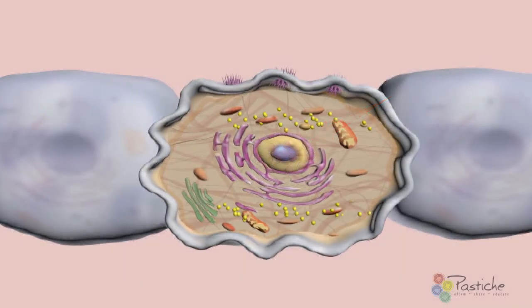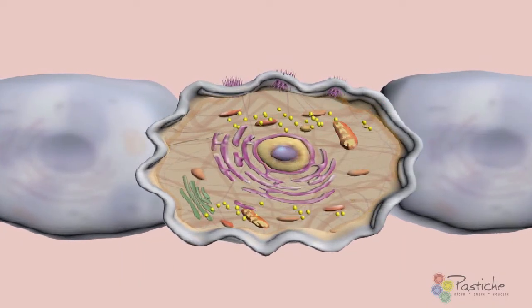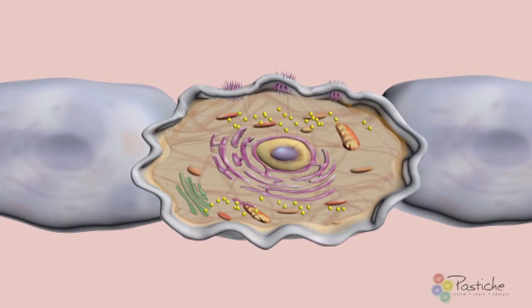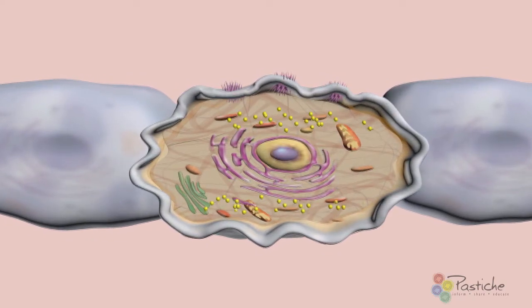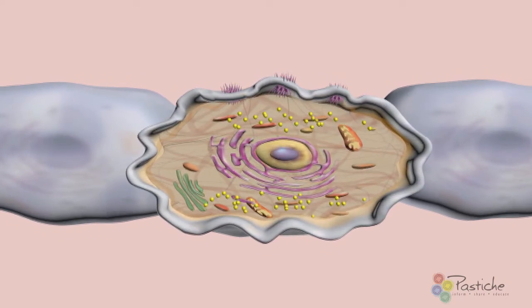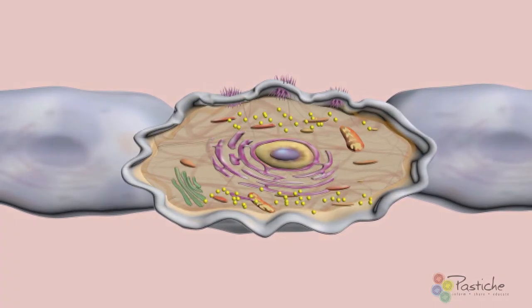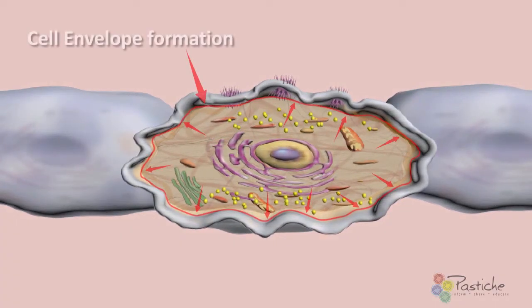The keratinization process is well underway in the upper cells of the spinosum layer, and cell shape is further changing while moving into the granular layer. It is in the granular layer that the keratinocyte becomes less flexible and flattened in appearance. It is at this stage that the formation of the cornified cell envelope commences.